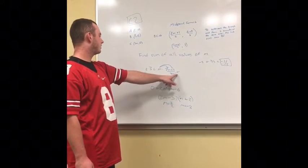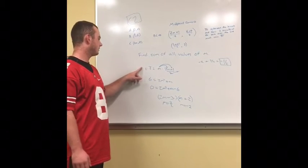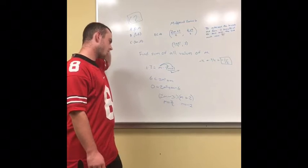And to start, I multiply it by 2 to get rid of the denominator, and you get 6. And then you distribute the M, and you get 2M squared plus M.